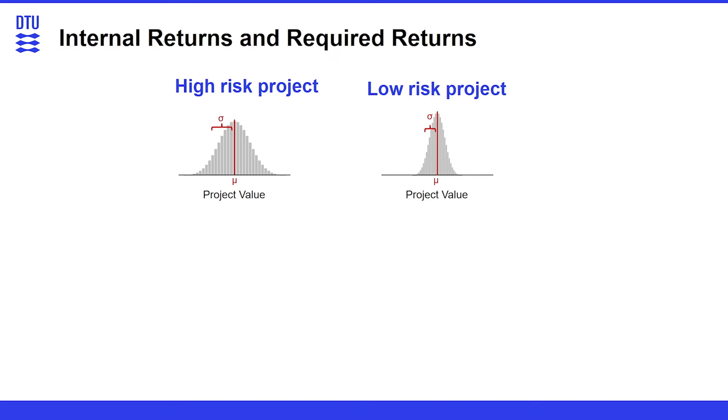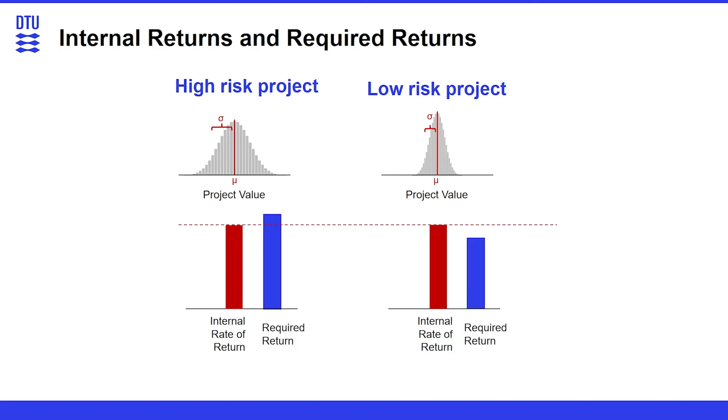I would deem the first one a low risk project because there is a narrow probability distribution and the second project a high risk project with a broad probability distribution. So it can be the case now that both of these projects have the same internal rate of return in the mean. However, one project has a higher required return because it is riskier and the other has a lower required return because it is less risky.